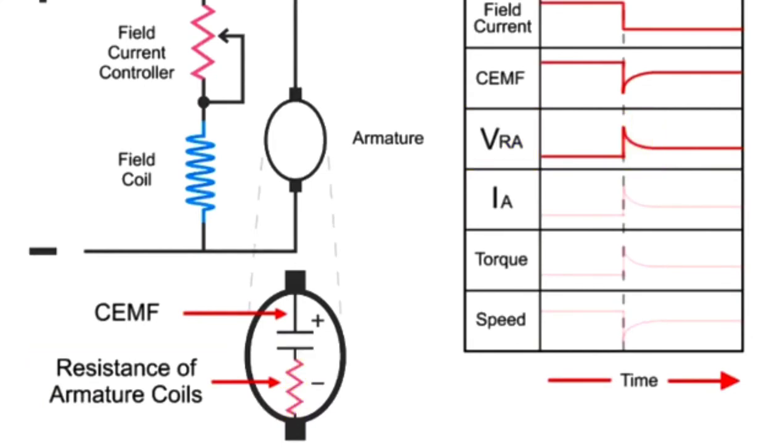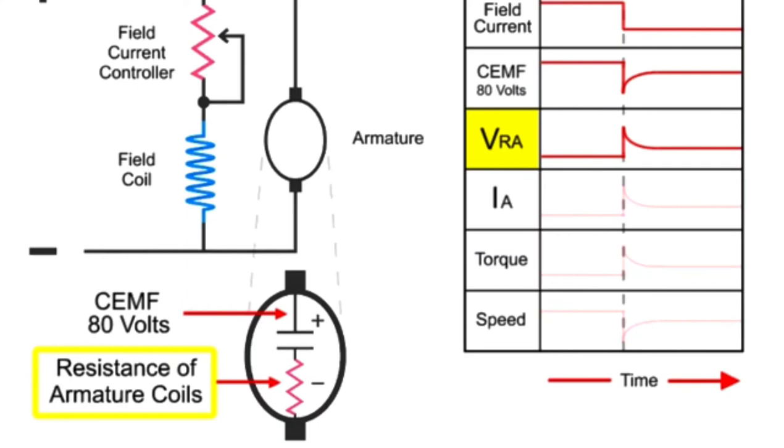Thus, if there is 100 volts applied and the CEMF is 80 volts, the drop across the resistance of the armature coils will be 20 volts. When the field current is reduced, the CEMF drops to 50 volts, and the drop across the resistance of the armature coils, VRA, increases to 50 volts.